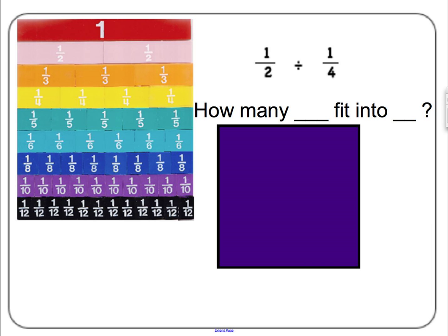Division can be solved using the definition of division, which is repeated subtraction — or how many of one fit into the other. For example, one-half divided by one-fourth means how many one-fourths fit into one-half. Children can see that if you have one-half, you can put one one-fourth in, and then another one. So the answer is two.